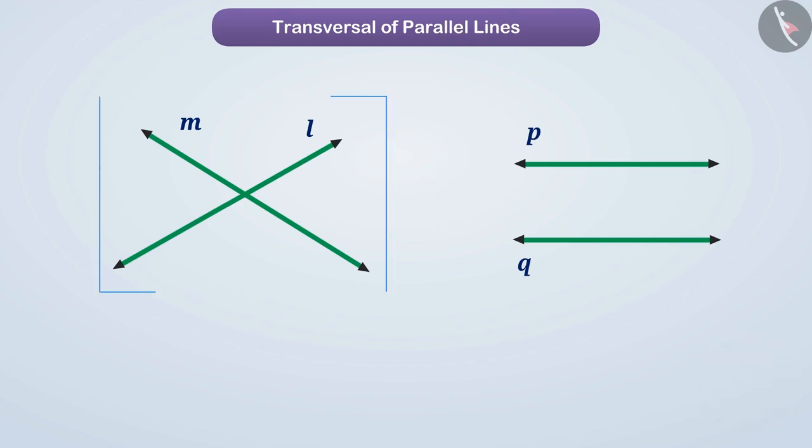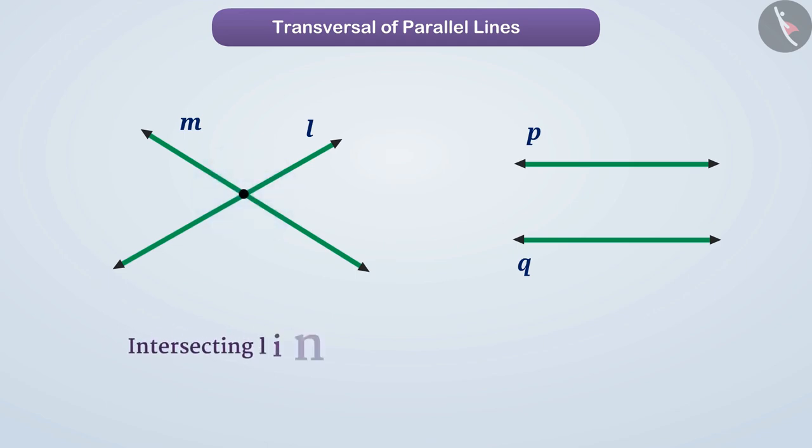In this pair, two lines are intersecting each other. Such lines are called intersecting lines.